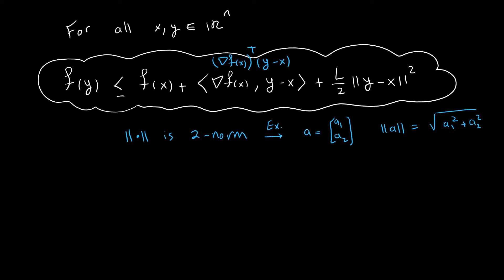For a function that has Lipschitz continuous gradient, we can have this inequality. This inequality means that for every known point x, I can create a quadratic function — quadratic because we have distance squared — which is an upper bound of the function value at points y. So we can bound the function at each different point y using a quadratic function.